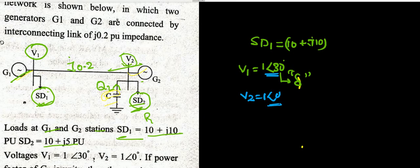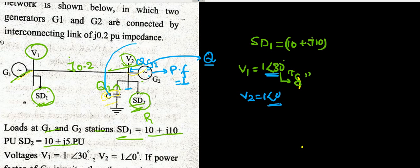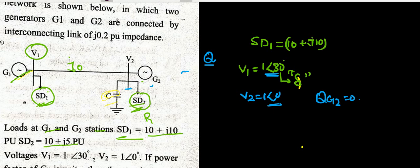Since the power factor of generator G2 is unity, this generator will not supply any reactive power to the bus. Therefore QG2, the reactive power supplied by generator 2, is equal to zero. The reactive power at bus 2 must be supplied by the flow from generator G1 and by the shunt capacitor QC.